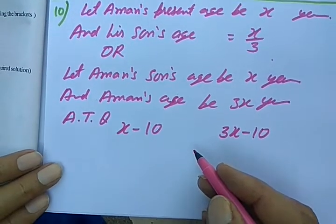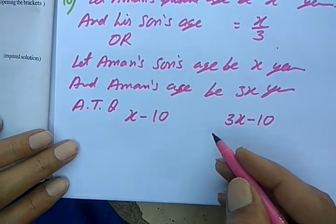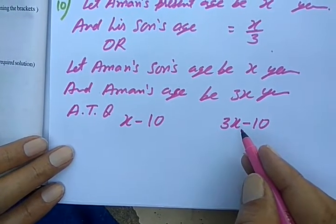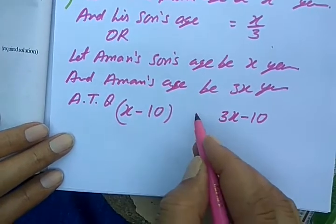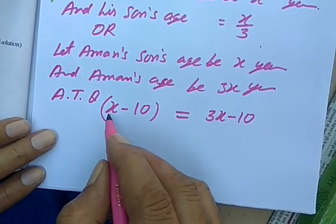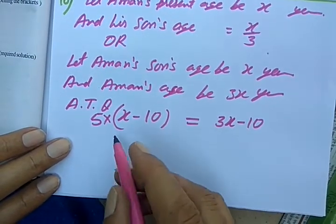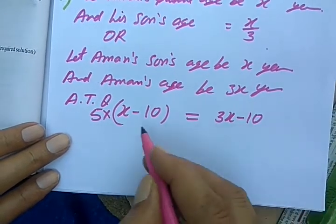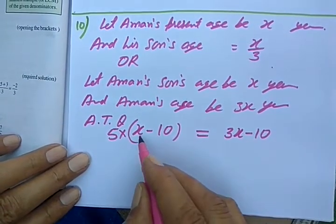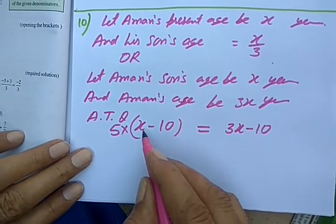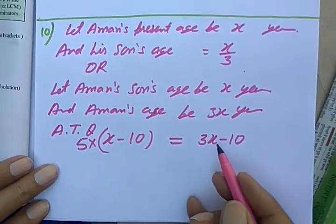There is a condition and the condition is that Aman's age was five times the son's age. So you will have to multiply son's age by five. So if you multiply this by five, it becomes equal. Now let's solve them.